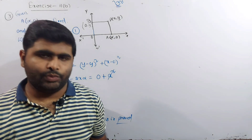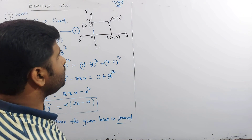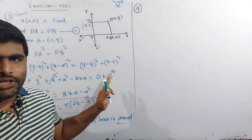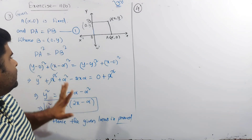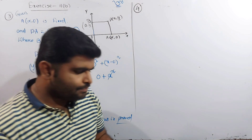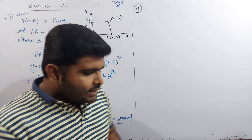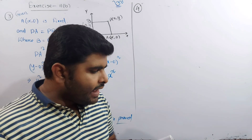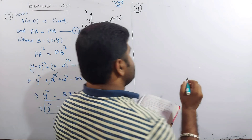We have conquered question number 3. Now we move to question number 4: find the locus of the point P(x, y) such that the area of triangle PAB is 5, where A is the point (1, −1) and B is the point (5, 2).